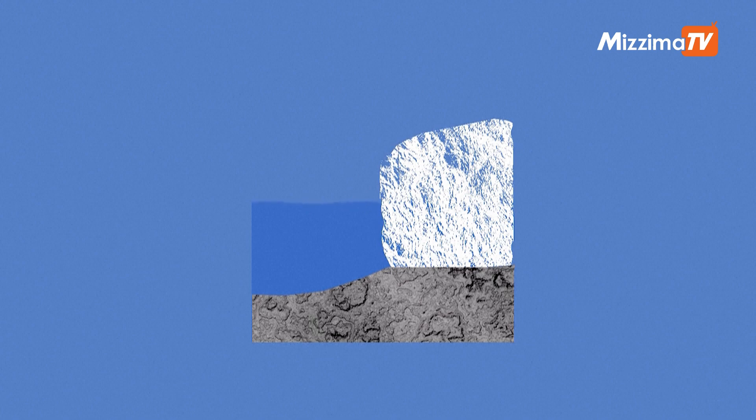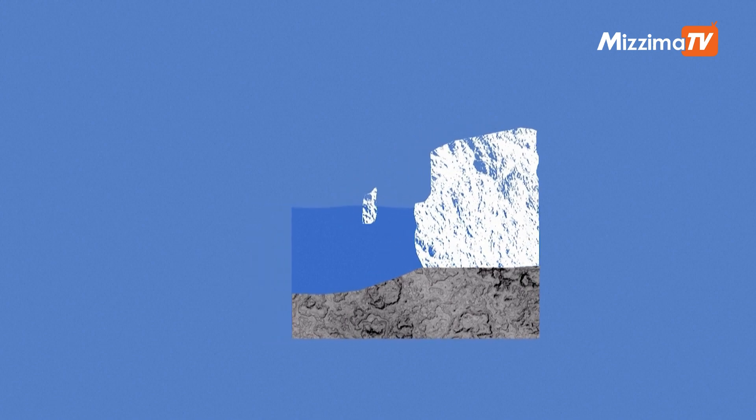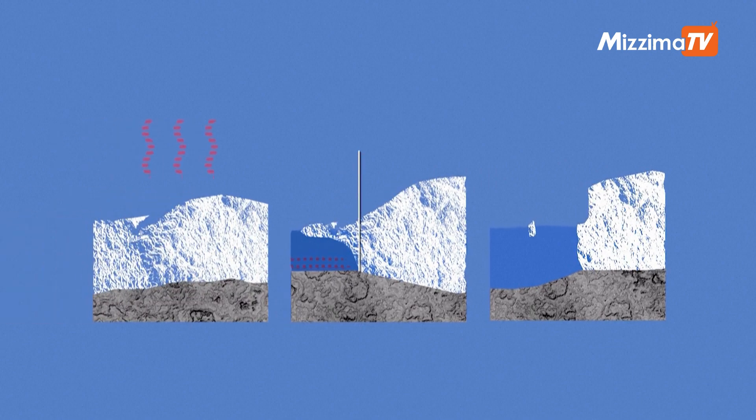The ice sheet would therefore end with high cliffs directly exposed to the ocean. Mechanically unstable, these cliffs would progressively collapse, causing significant ice loss.